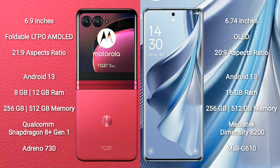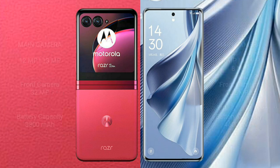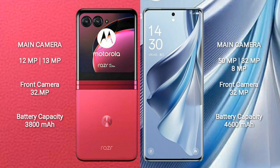The Motorola Razr 40 Ultra comes with 8GB or 12GB RAM and 256GB or 512GB internal storage, powered by a Qualcomm Snapdragon 8 Gen 1 processor with Adreno 730 GPU. The OPPO Reno 10 Pro comes with 16GB RAM and 256GB or 512GB internal storage, powered by a MediaTek Dimensity 8200 processor with Mali-G610 GPU.